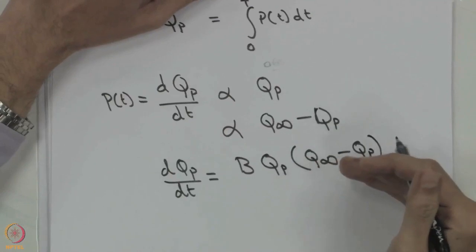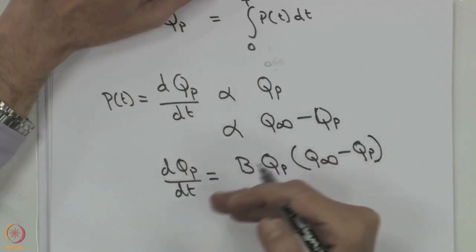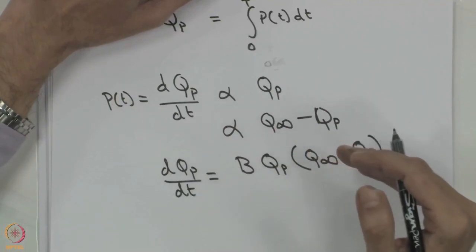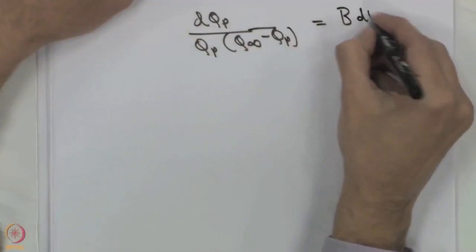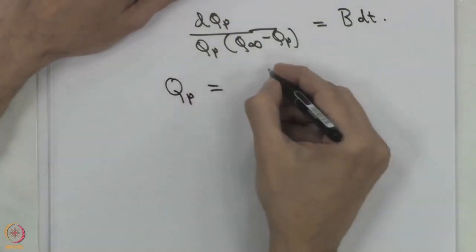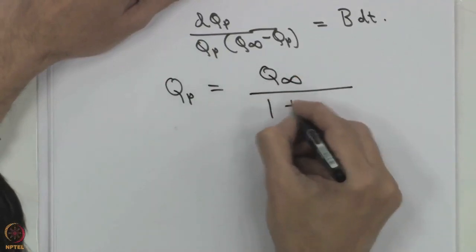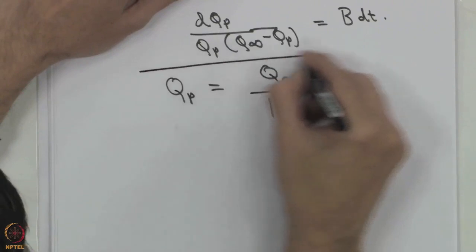This gives us a model: dQp/dt = B × Qp × (Q infinity − Qp). In the initial phase it is exponential growth, and as we go towards the limit, growth decreases because of the limiting term (Q infinity − Qp). Integrating this differential equation, we get Qp = Q infinity / (1 + A × e^(−B × Q infinity × T)), which is an S-shaped logistic curve.